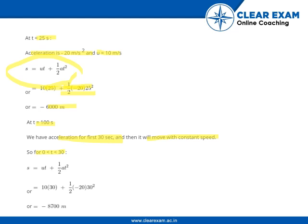For time 0 to 30 s, the distance covered is s = ut + ½at². Putting the values, we get -8700 m.